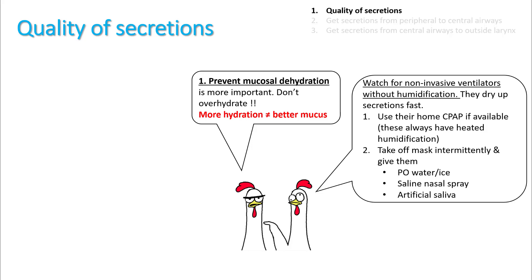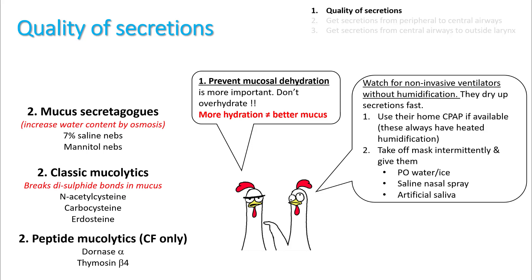Quality of secretion is important. Make sure that the patient does not have mucosal dehydration. However, over-hydrating these patients does not result in better mucus quality. Watch out for non-invasive ventilators without humidification — these can dry up secretions pretty fast. To thin out mucosecretions, use mucosecretagogues like 7% saline nebs, classical mucolytics like N-acetylcysteine, or peptide mucolytics such as Dornase alpha and thymosin beta-4. However, the last two are useful only in cystic fibrosis patients.